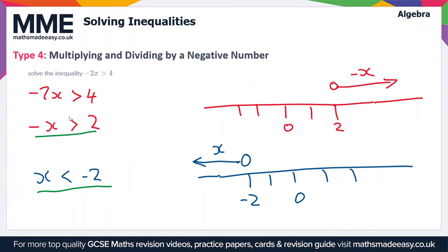So here we had minus x is greater than 2. And now we've got x is less than minus 2. So whenever you multiply and divide by a negative number, the inequality symbol changes sign.